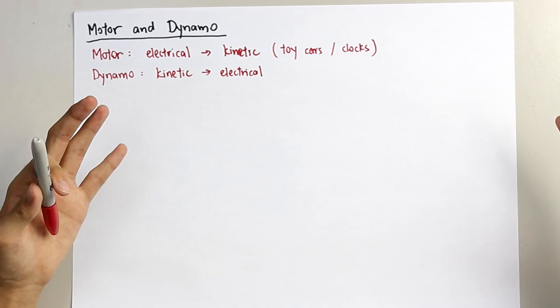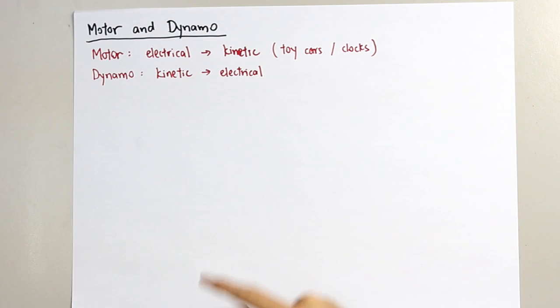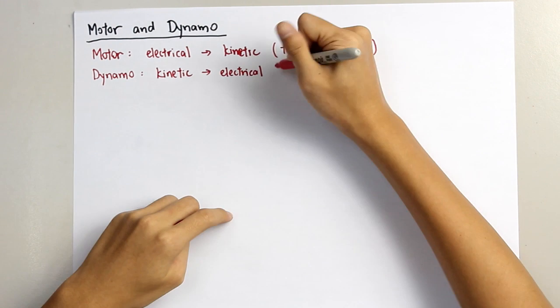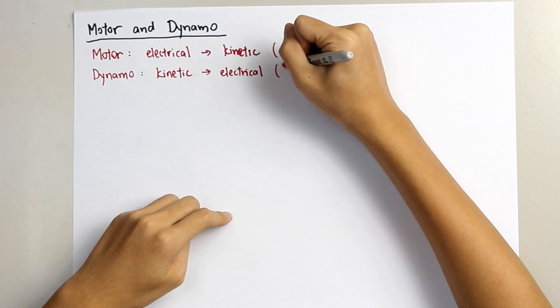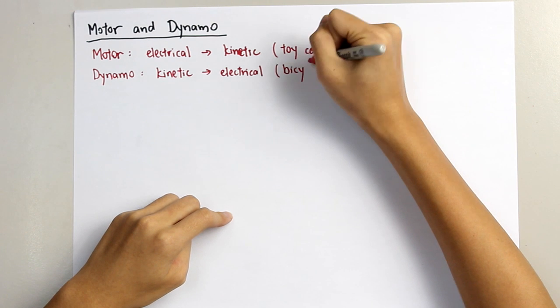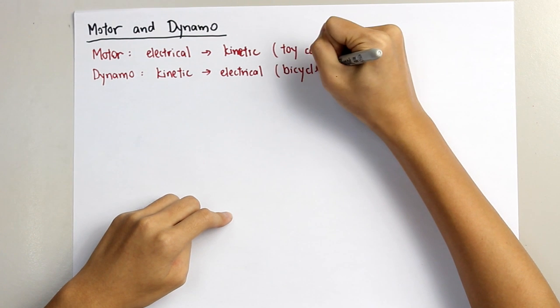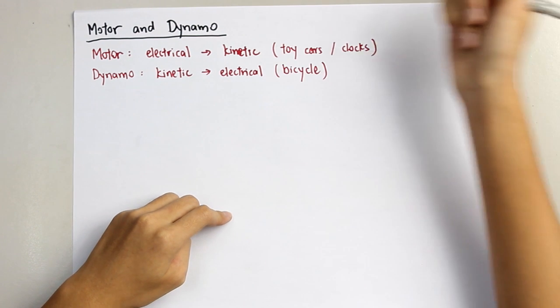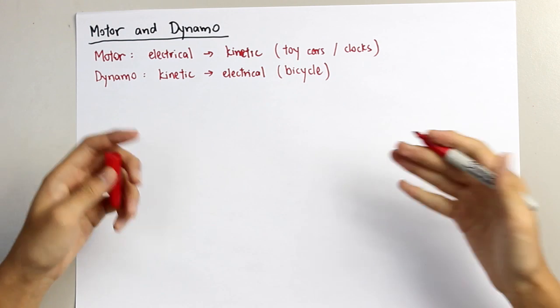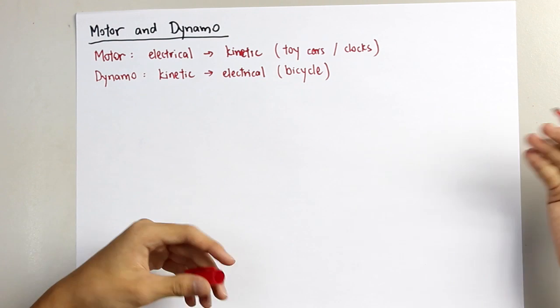For a dynamo, where can you find it? Very commonly, you can find it on a bicycle. Why do we need a dynamo on a bicycle?